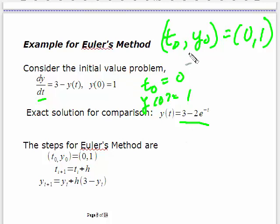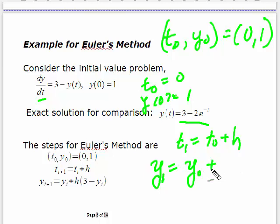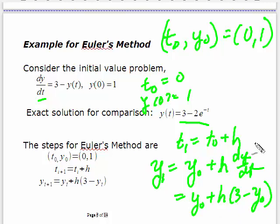So how do I fix the next step? t1 equals whatever t0 is plus h. And the next value, y1, equals y0 plus h, the step size, times dy by dt. But dy by dt, in this case, is 3 minus y times t. So you use the previous one, 3 times y0.